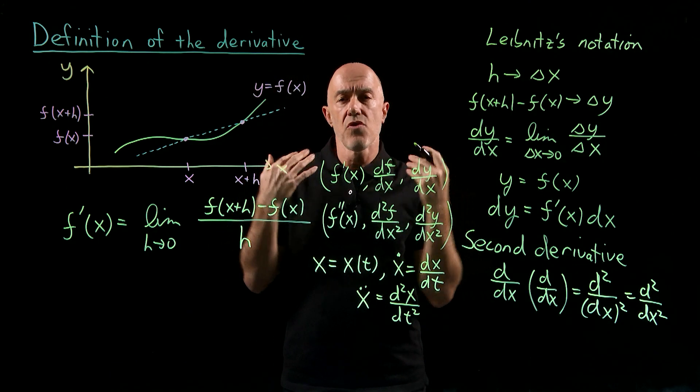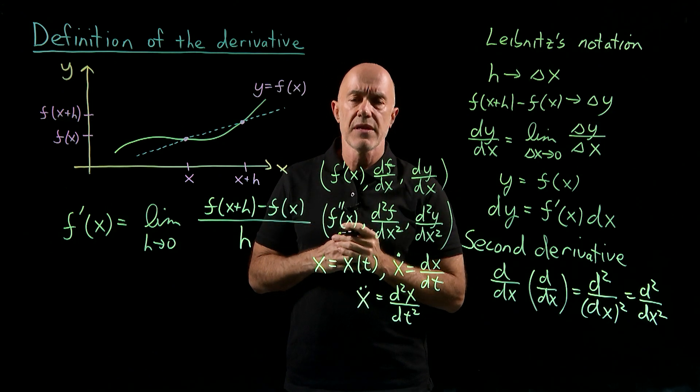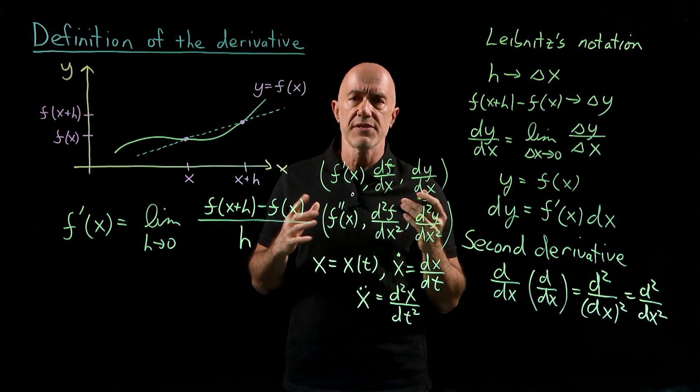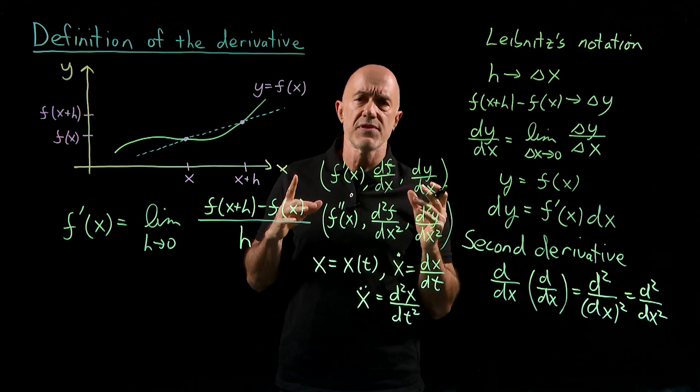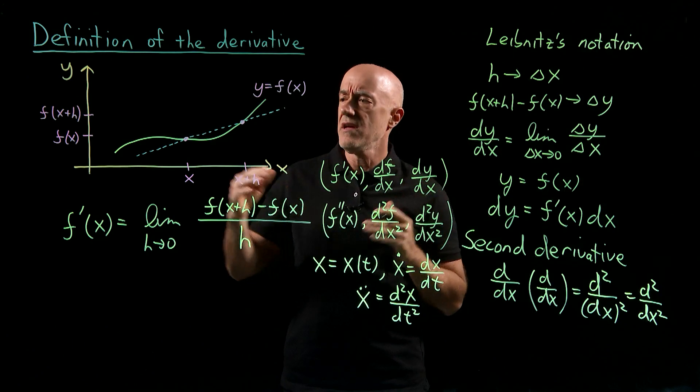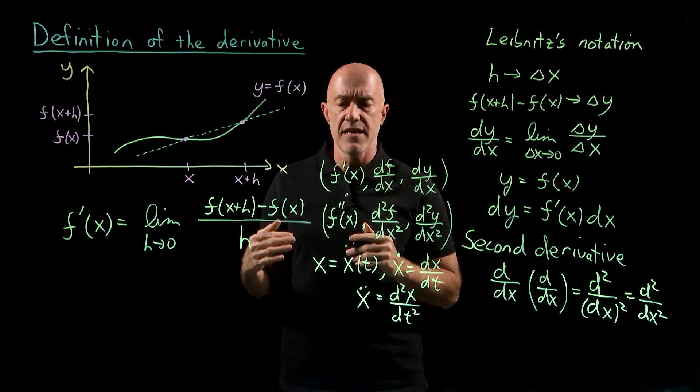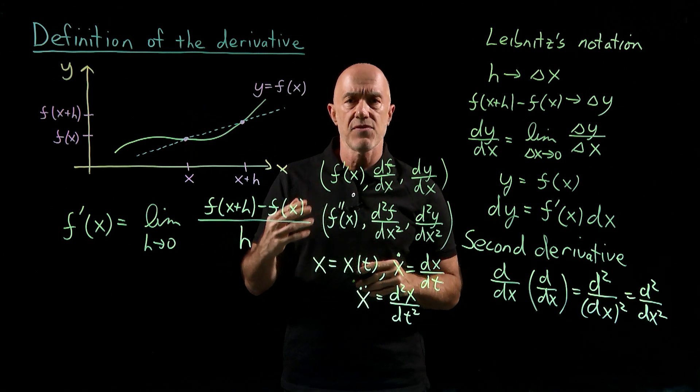So in order for a function to be differentiable, to have a derivative, it has to be continuous. But not all continuous functions have derivatives at every point. So in order to have a derivative, the slope of the tangent line has to be the same whether you go from the left or from the right.